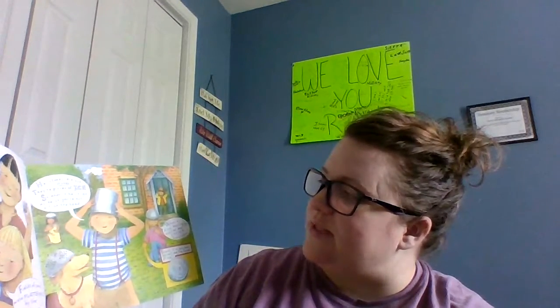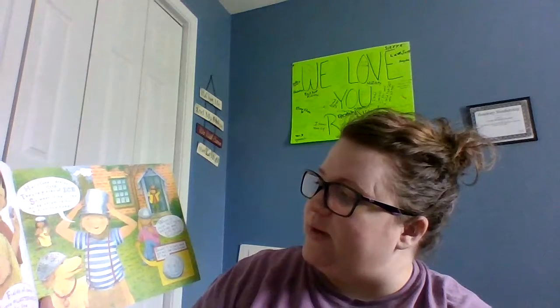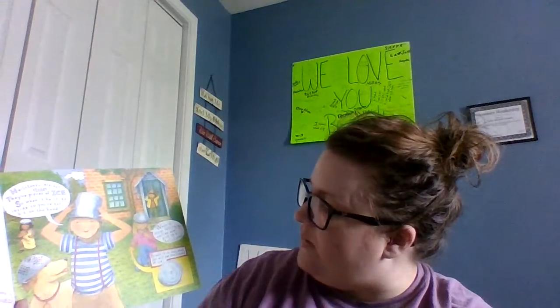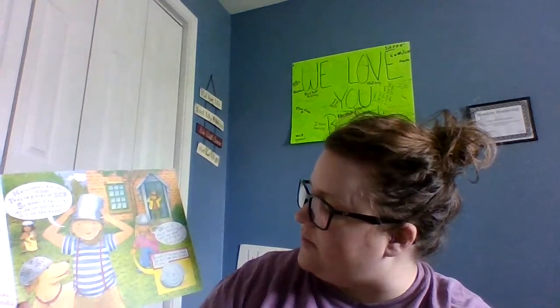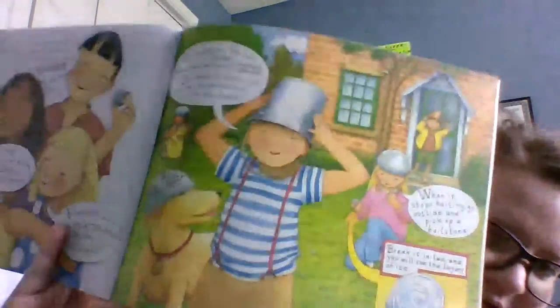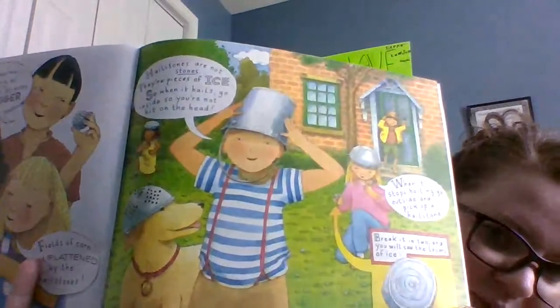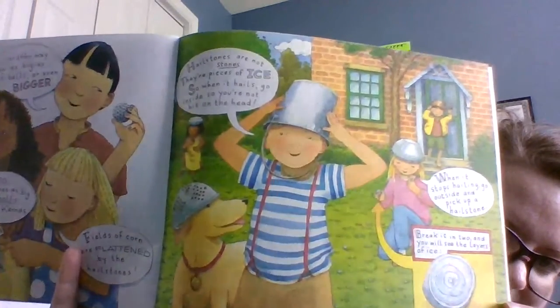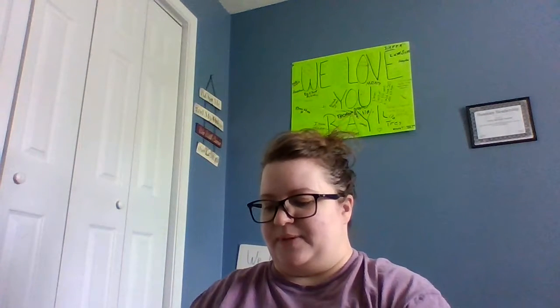Hailstones are not stones — they are pieces of ice. So when it hails, go inside so you're not hit on the head. When it stops hailing, go outside and pick up a hailstone. Break it in two and you will see the layers of ice. So all these guys are protecting their heads — don't be outside when it's hailing, you want to be inside, otherwise you'll hurt yourself. After it's over you can go outside and pick up a piece and see what's inside.